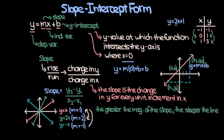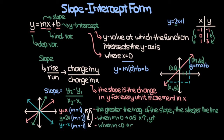Now let's consider the pink and cyan lines. They have slopes with the same magnitude of 1, so both lines are equally steep. But for the pink line, since the slope is positive, as x increases, y increases — the line heads into the first quadrant. For the cyan line with a slope of negative 1, as x increases, y decreases — the line heads into the fourth quadrant. So when m is greater than 0, y increases as x increases; when m is less than 0, y decreases as x increases.